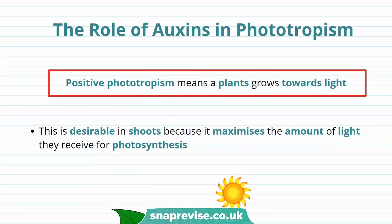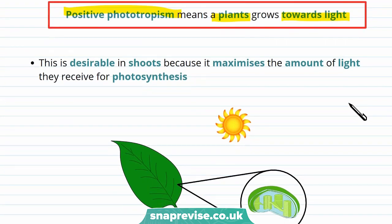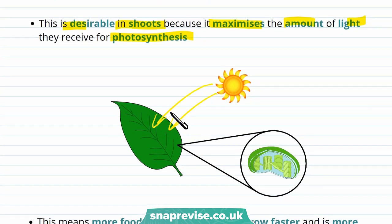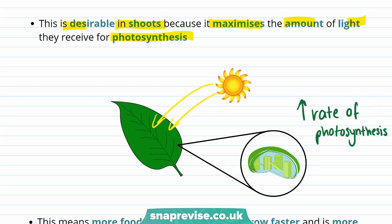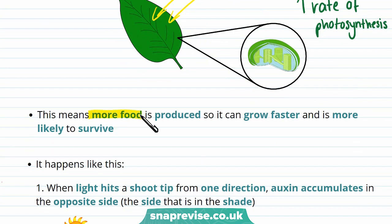Now I've given a general overview on tropisms, let's focus on phototropism. Positive phototropism means a plant grows towards light. This is desirable in shoots because it maximises the amount of light they receive for photosynthesis. If plants get more sunlight, this increases the rate of photosynthesis, which means more food is produced, so the plant can grow faster and is more likely to survive.